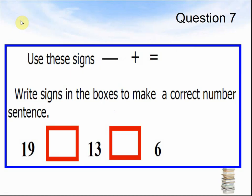Question 7. Use these signs — take away, plus, and equals — to write signs in the boxes to make a correct number sentence: 19 something 13 something 6. Pause the video until you have answered the question.